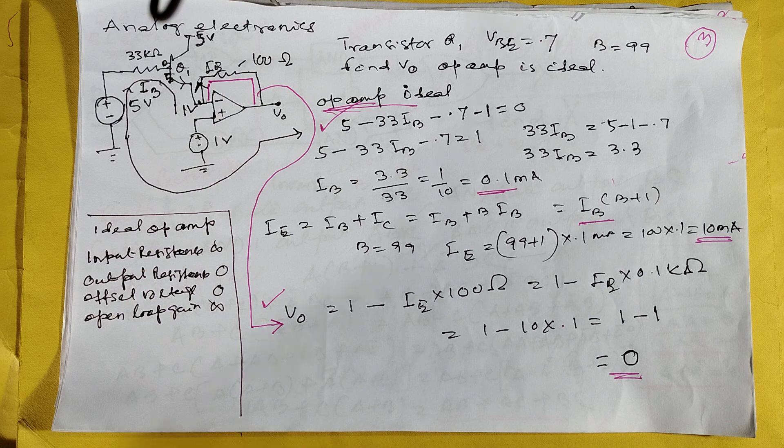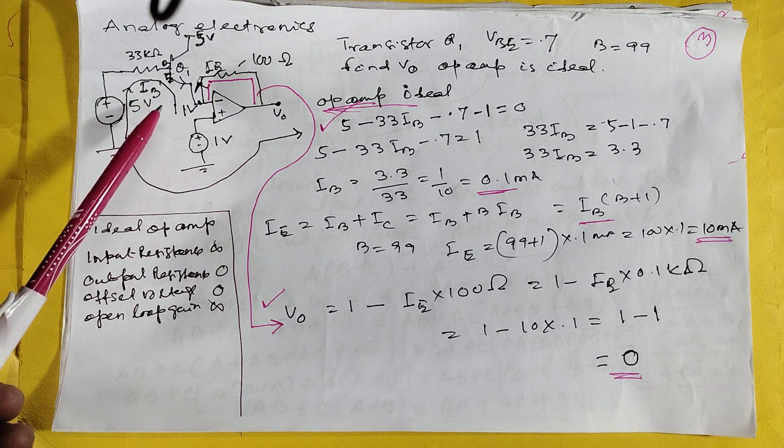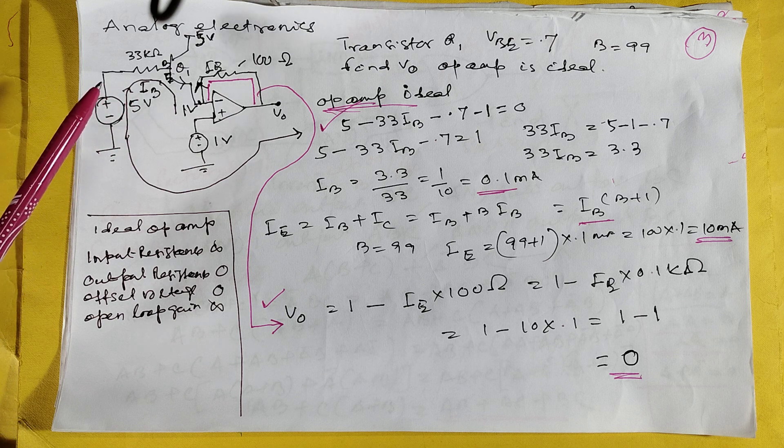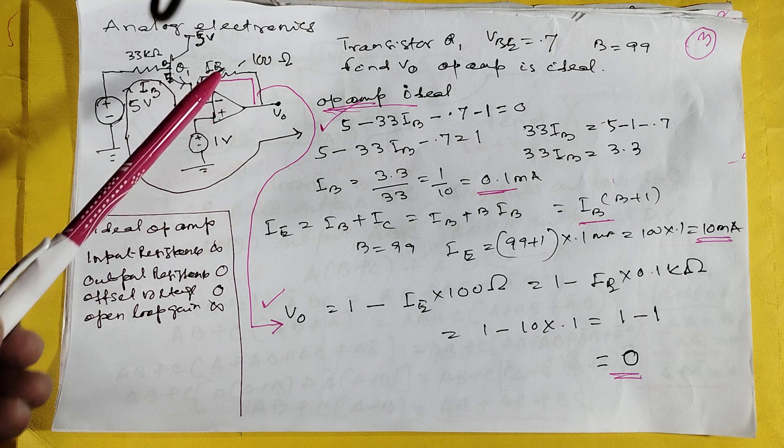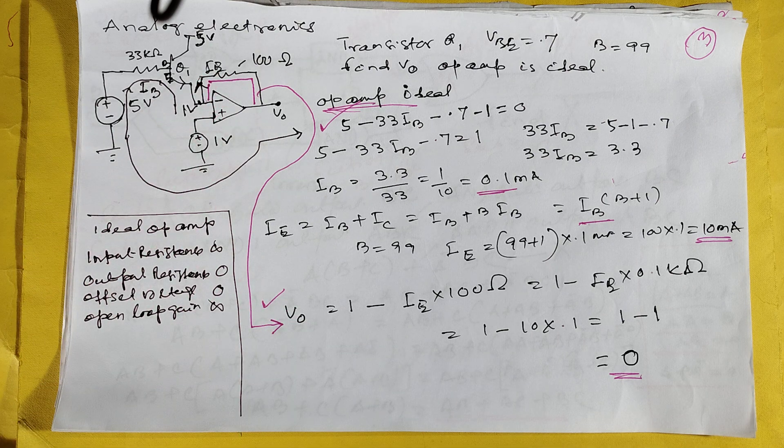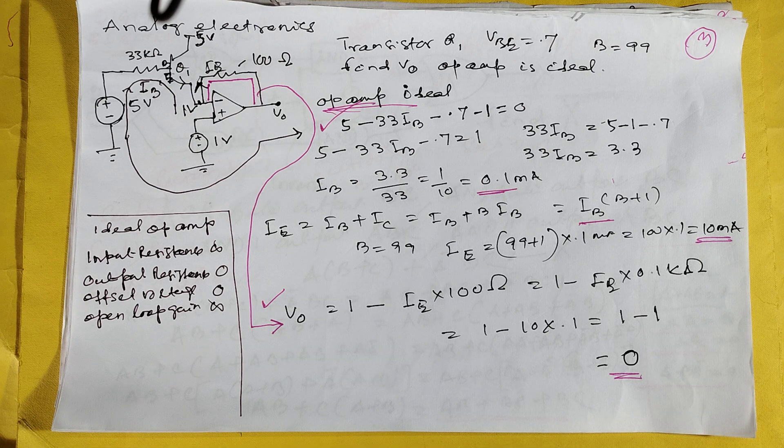This is a problem from analog electronics. First, find the input side, you will get IB. From IB you will get IE. Output side, so V0 coming 0. This is the characteristic of ideal operational amplifier.